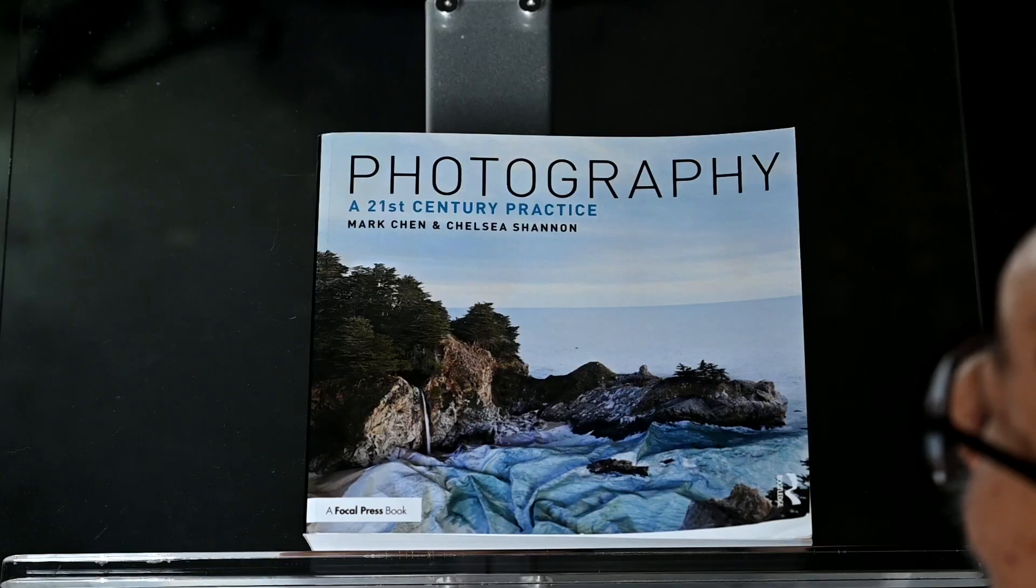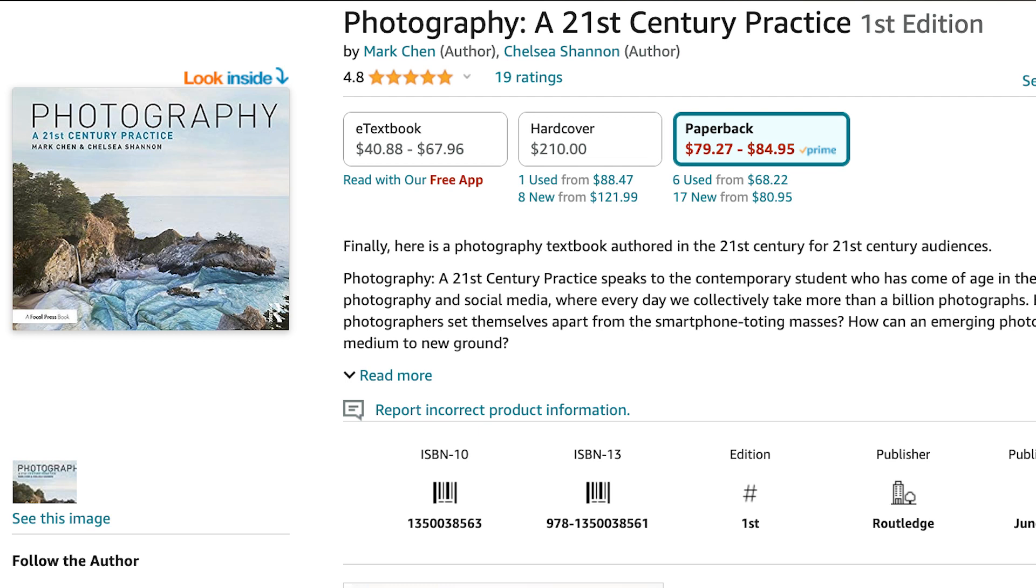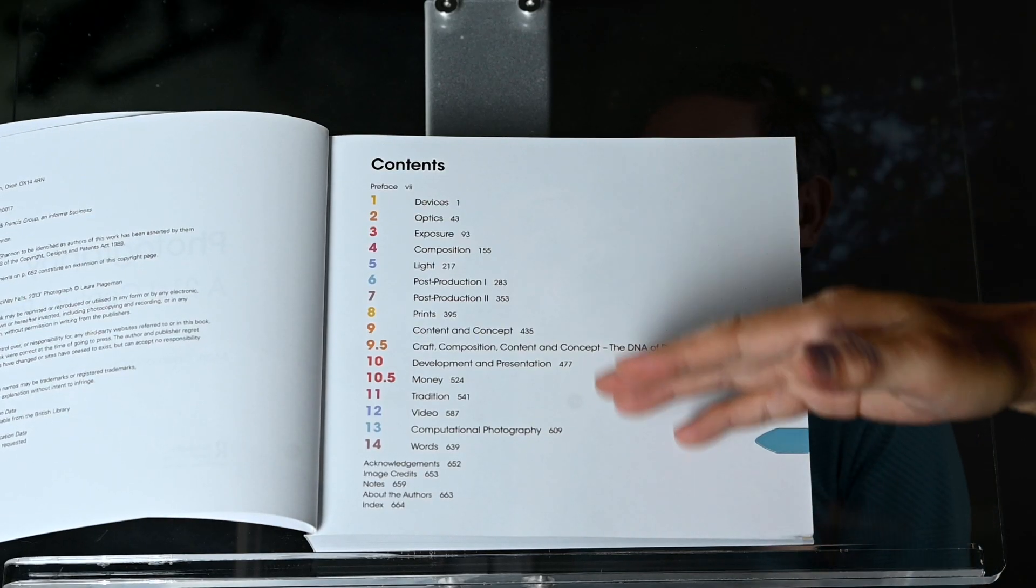Taylor and Francis is the publisher and the book is published under the brand of Focal Press and Routledge. You can find the link to the official website under the descriptions below. It is also available on Amazon in the format of paperback, hardcover, and e-textbook.